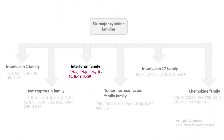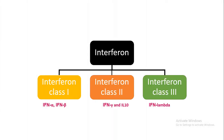Interferons are one of the family members of the six cytokine families. The interferon family is subdivided into three sub-families: interferon class 1, class 2, and class 3. Interferon class 1 consists mainly of interferon alpha and beta, whereas class 2 interferons comprise interferon gamma and interleukin-10, whereas the newly discovered interferon lambda, discovered in 2003, is the prevalent family member of the interferon class 3 sub-family.